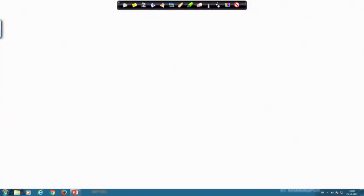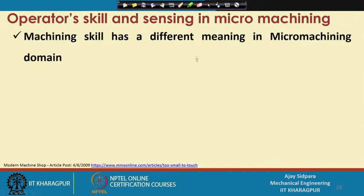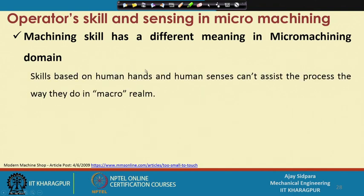Then we moved to what operator skill and sensing is required in micromachining. When you operate a machine at a micro scale versus a conventional scale there are a lot of differences. Skill-based human hands and human senses cannot assist the process the way they do in macromachining.